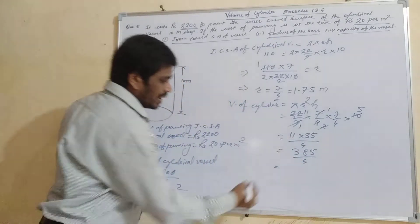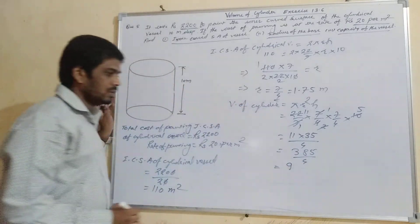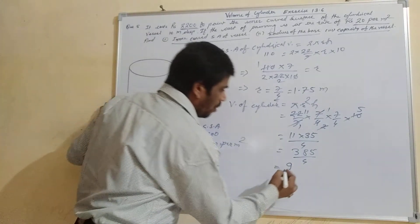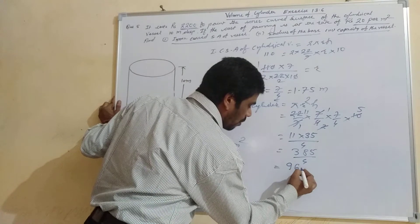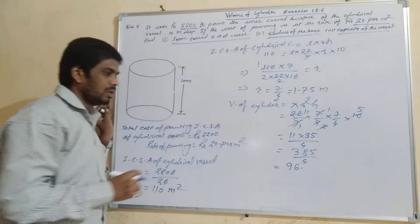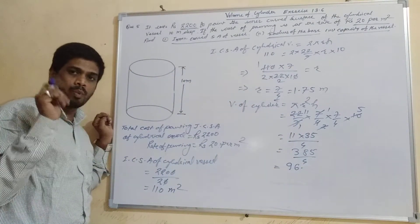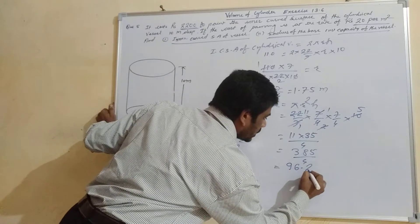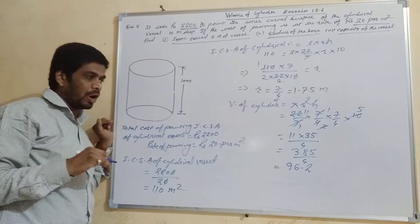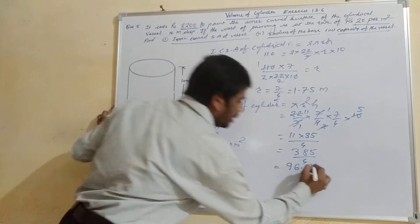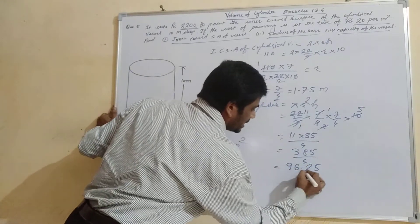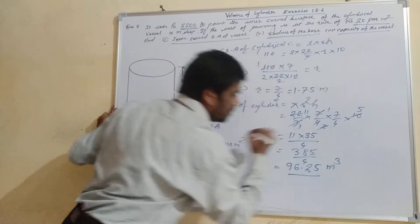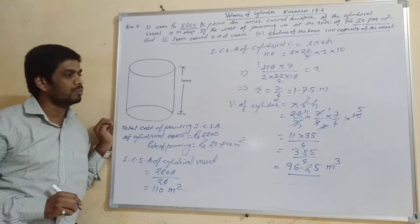Dividing 385 by 4: 4 × 96 = 384 with remainder 1, giving 96.25. So the volume is 96.25 cubic meters.